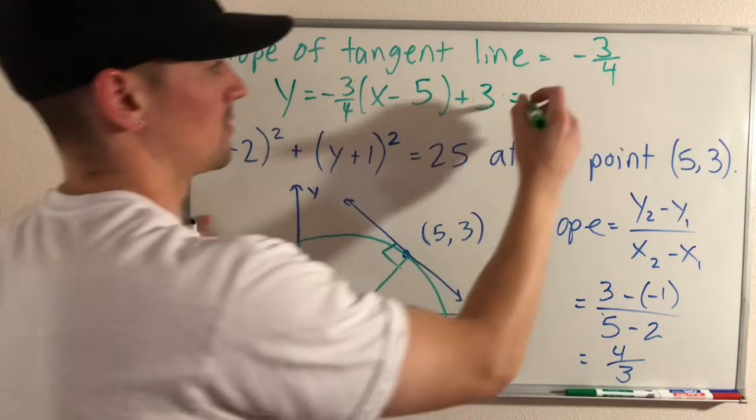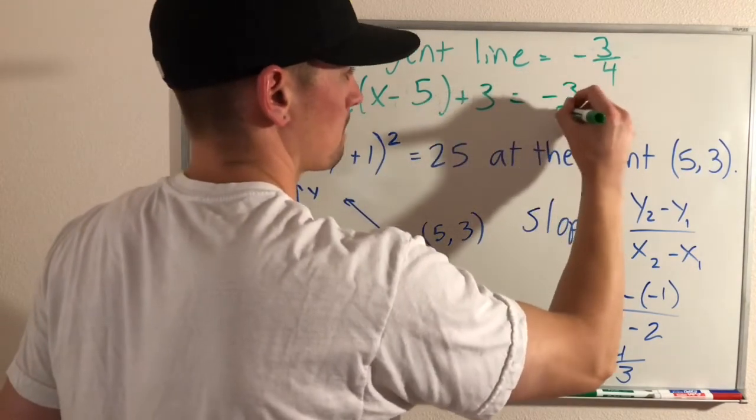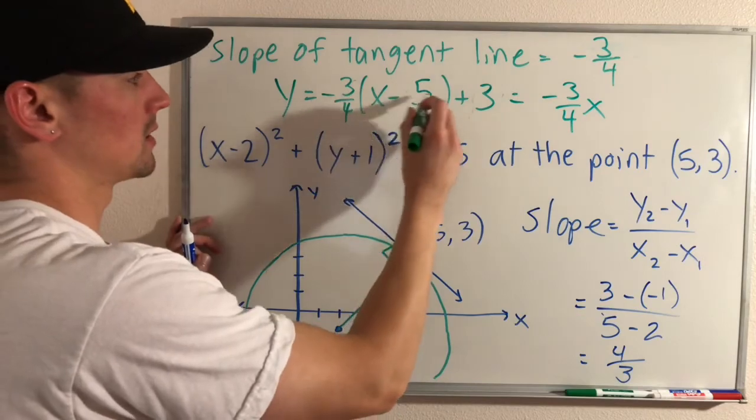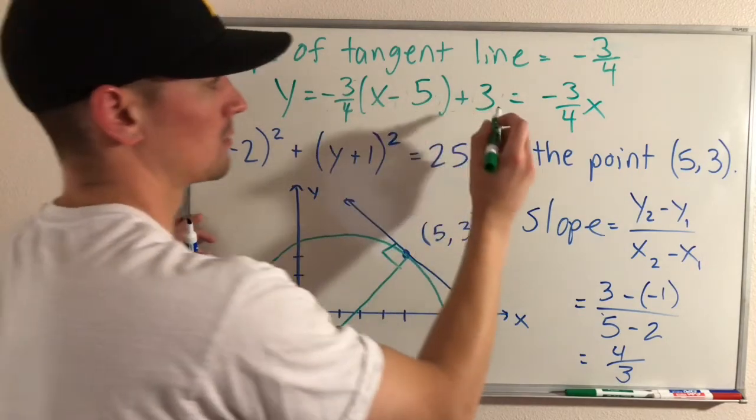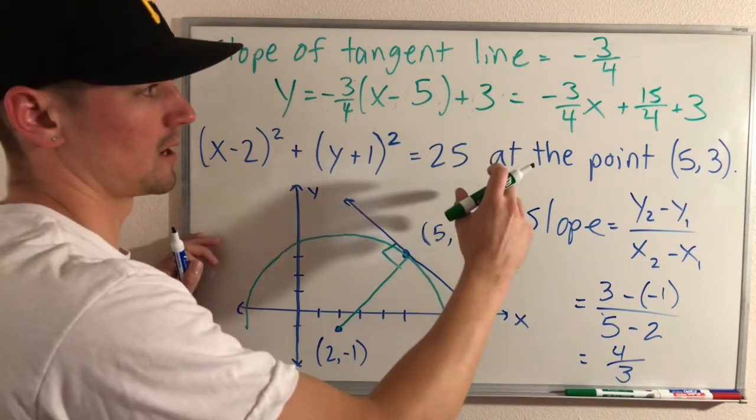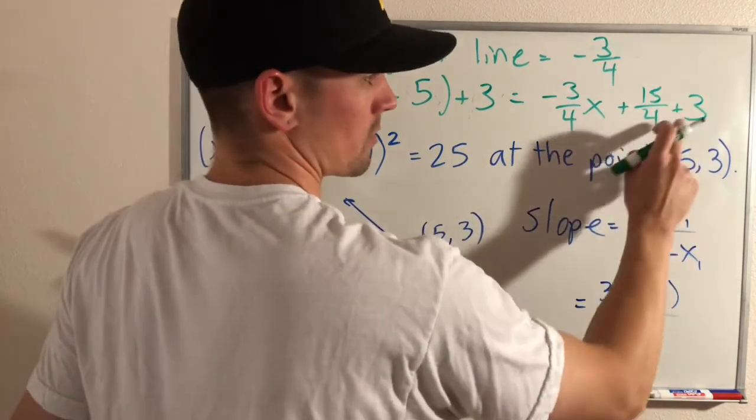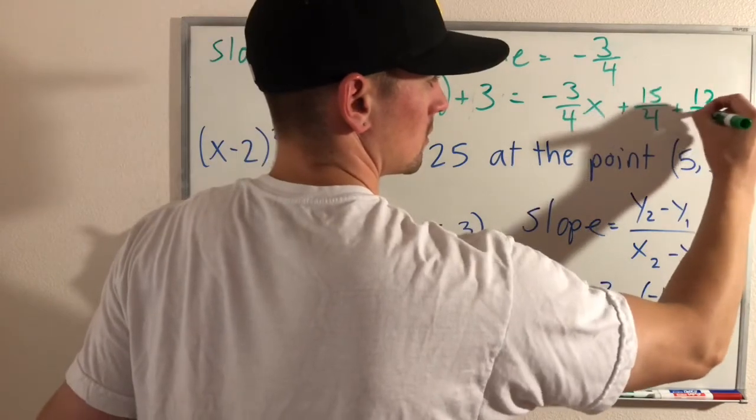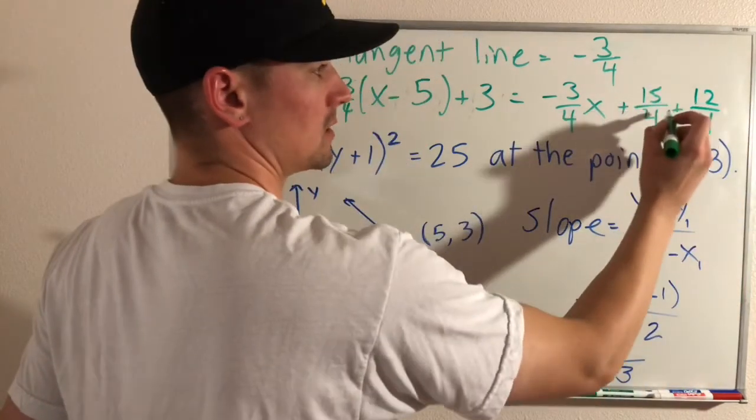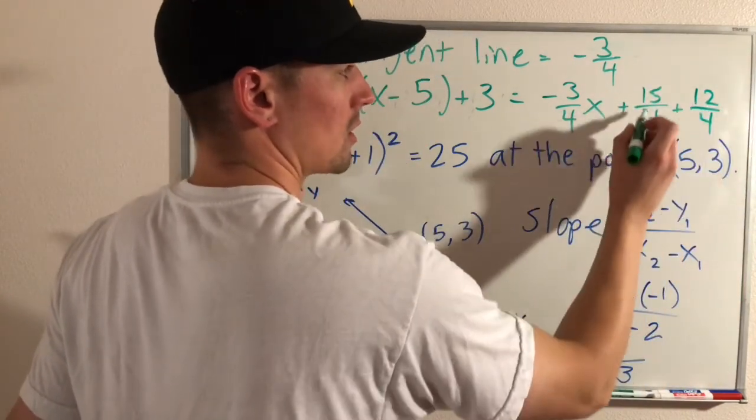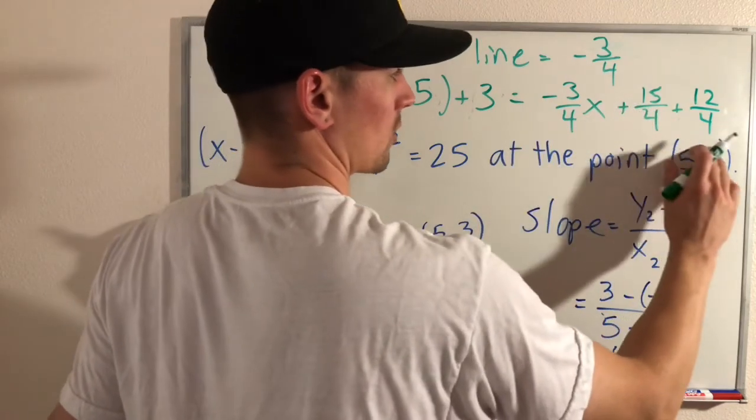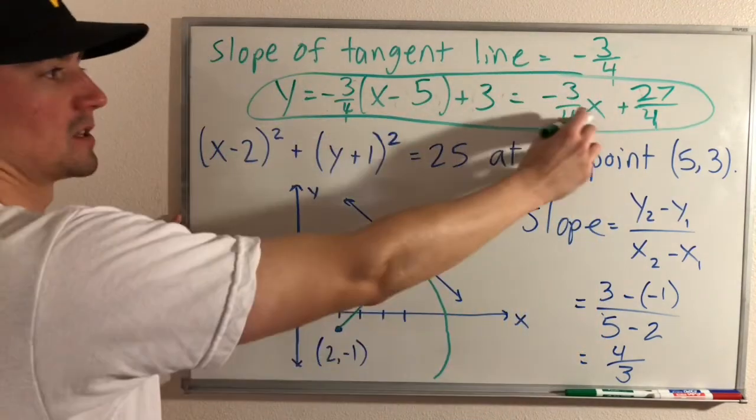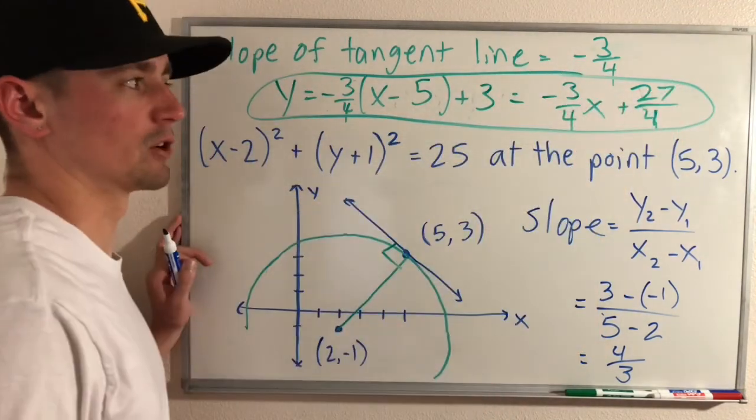Which would be -3/4x and then plus 15/4 plus 3, which would just simplify down to, 3 would be the same as 12/4. So 15/4 plus 12/4 would just give us 27/4. So this would be the equation of our tangent line right here. y = -3/4x + 27/4.